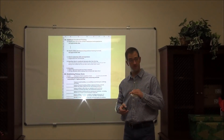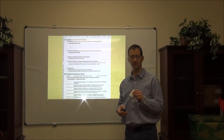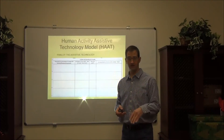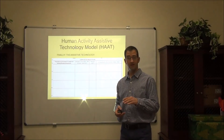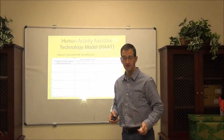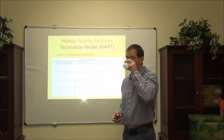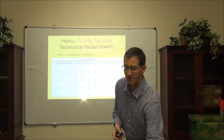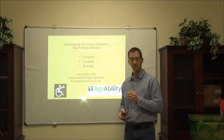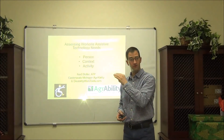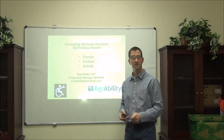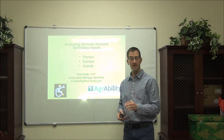After we go through all the experiences and education and talk to the person about what their primary goals are — what do you really want to accomplish — finally we get to the assistive technology. This is where we want to jump to first, but we get here last. We can develop a plan, research the technology, and come up with really good solutions, but we have to do it in this order: person, context, activity, and finally, good assistive technology that will be used and make a difference.